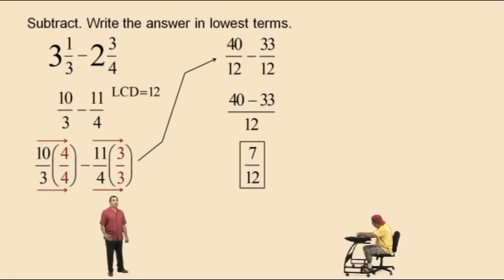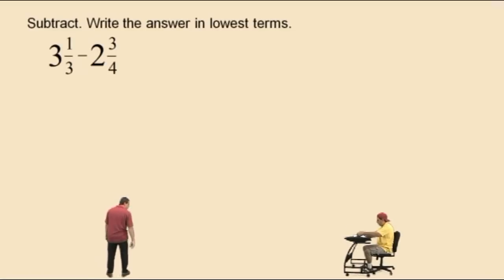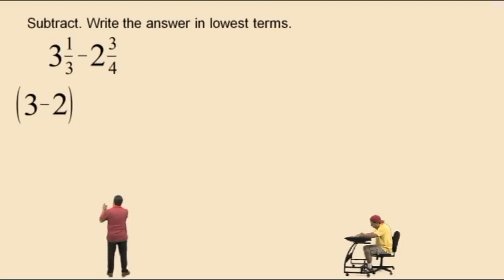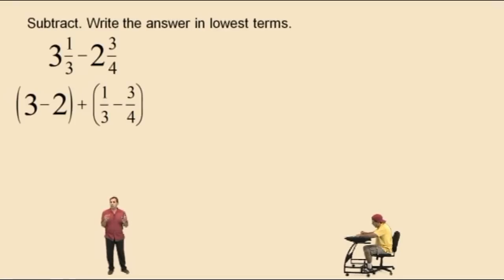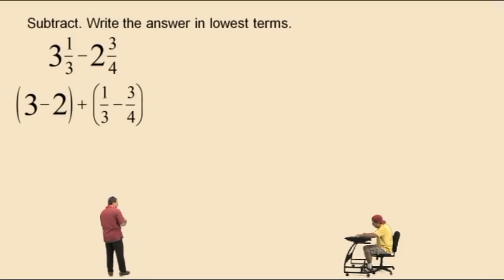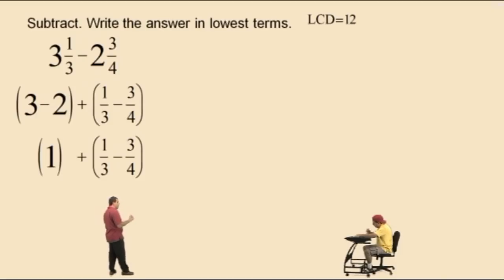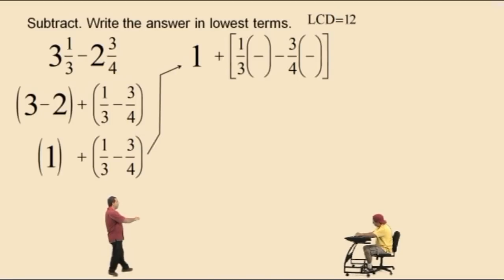Now let's try doing the problem by leaving the numbers in their mixed number form. Some of you won't like this, but we're going to do it anyway. So 3 and 1 third subtract 2 and 3 fourths. We're doing a subtraction problem, so we're going to subtract the whole number parts and subtract the fractional parts — but notice there's an addition in the middle because mixed numbers are really sums of whole numbers and fractional parts. So: 3 subtract 2 is 1, plus 1 third subtract 3 fourths — we've got to find the LCD, which again is 12. What do I multiply 1 third by to get a denominator of 12, Charlie? 3 times what is 12? 4.